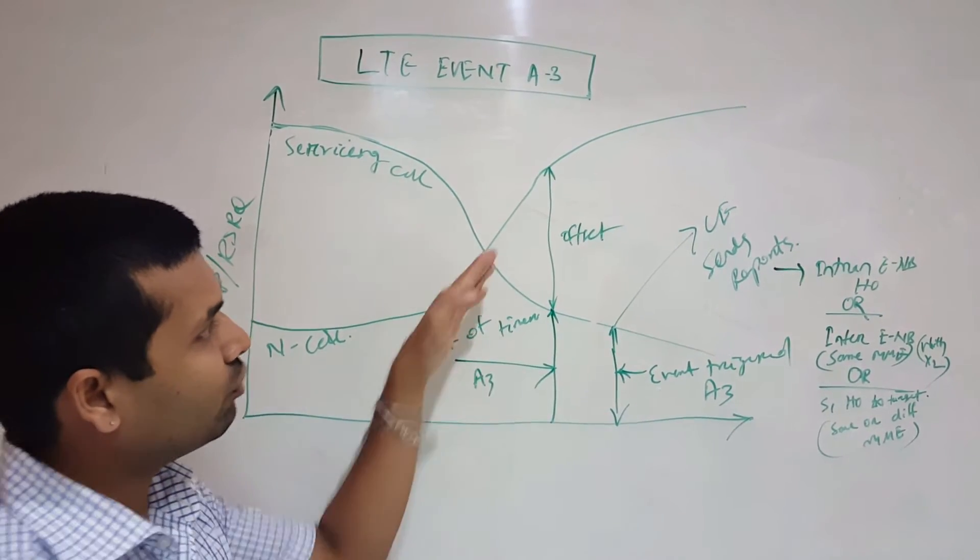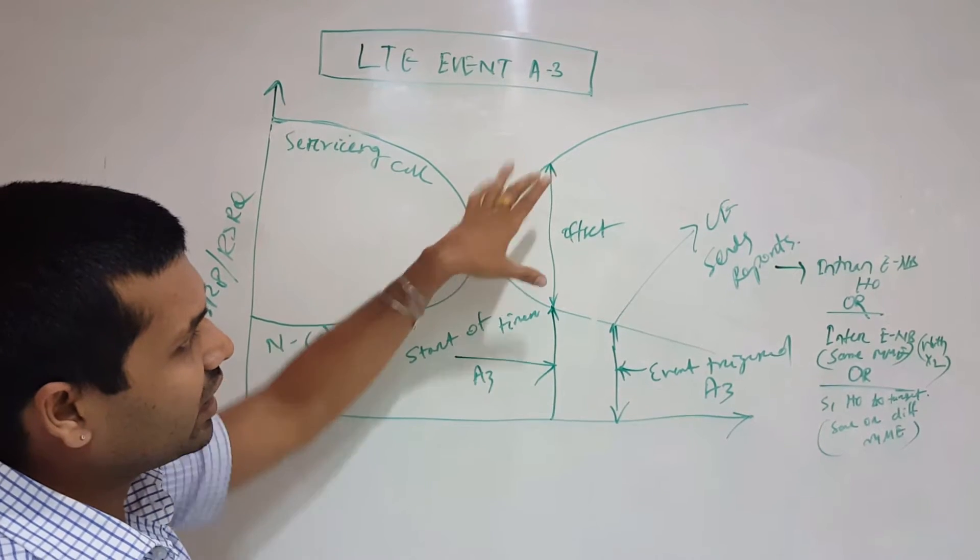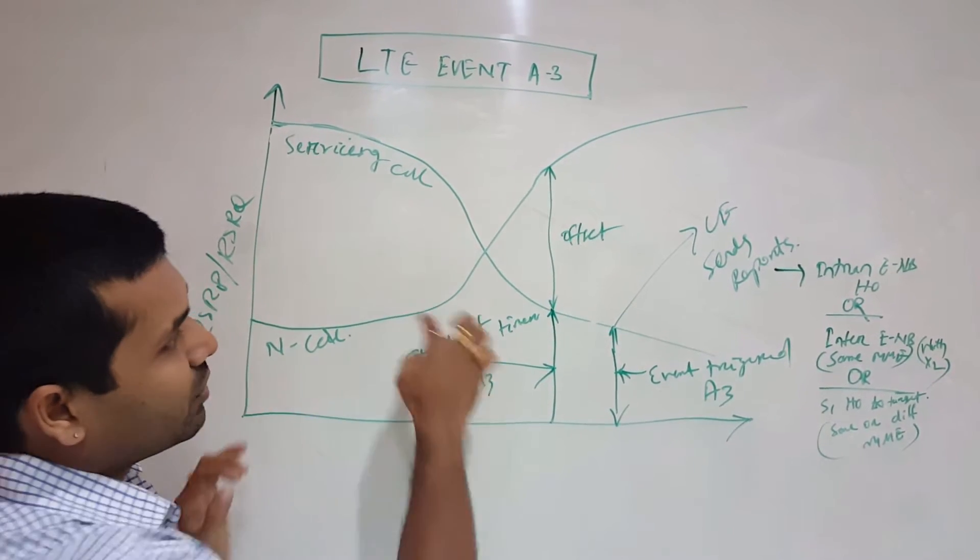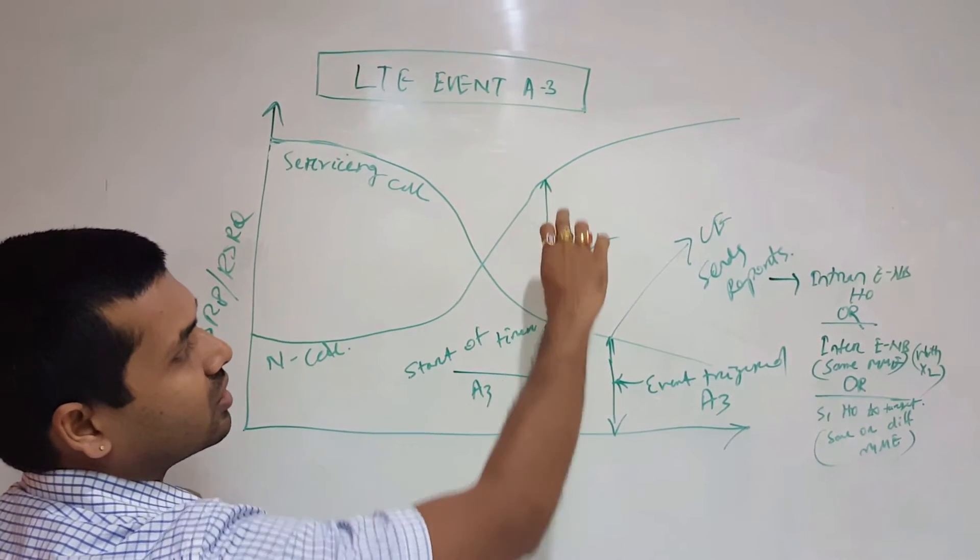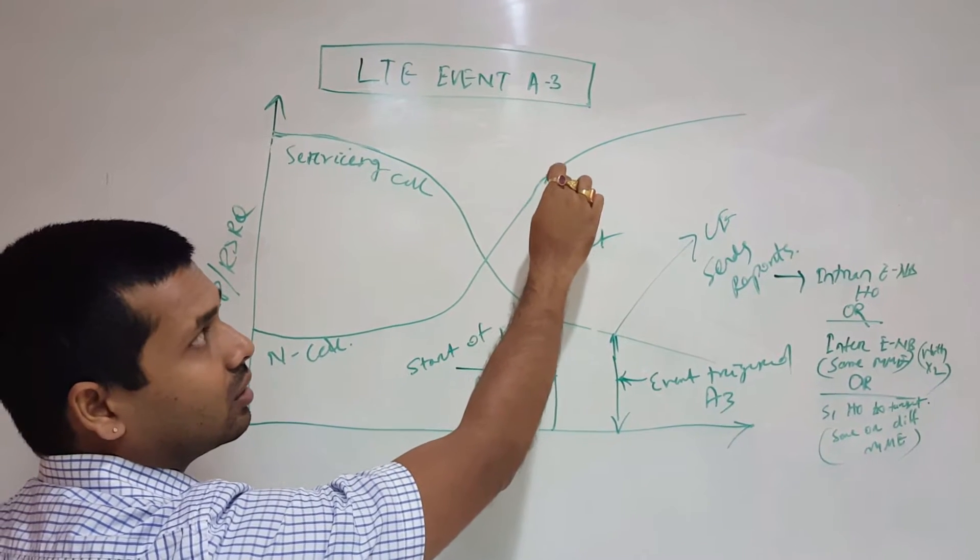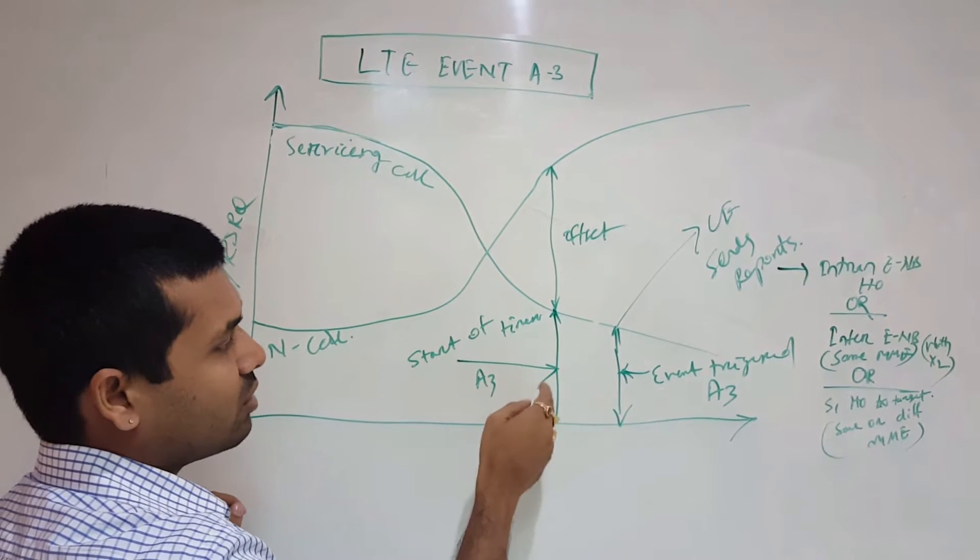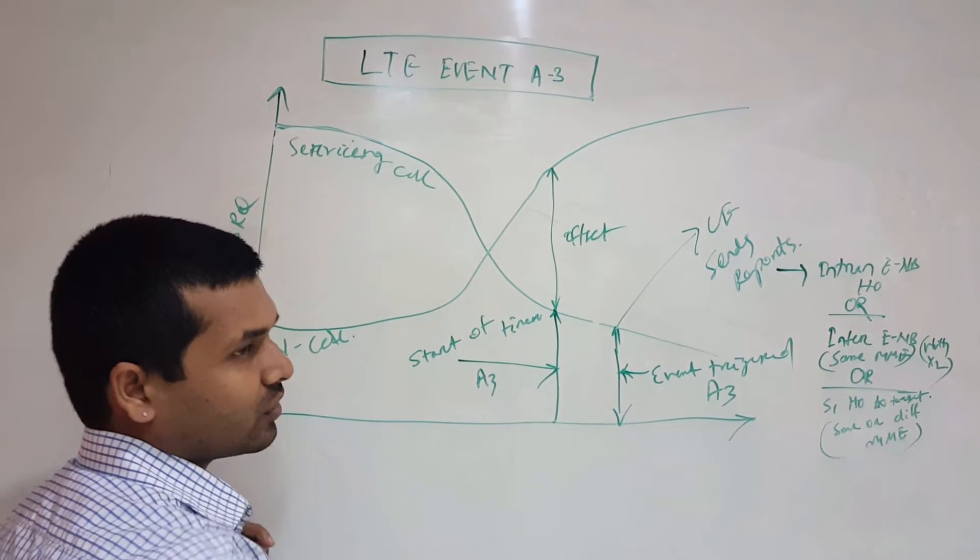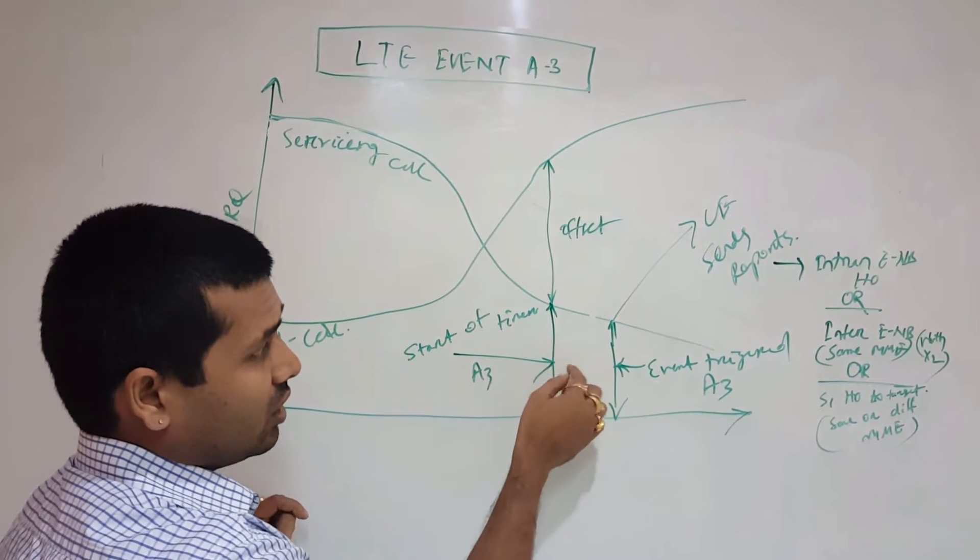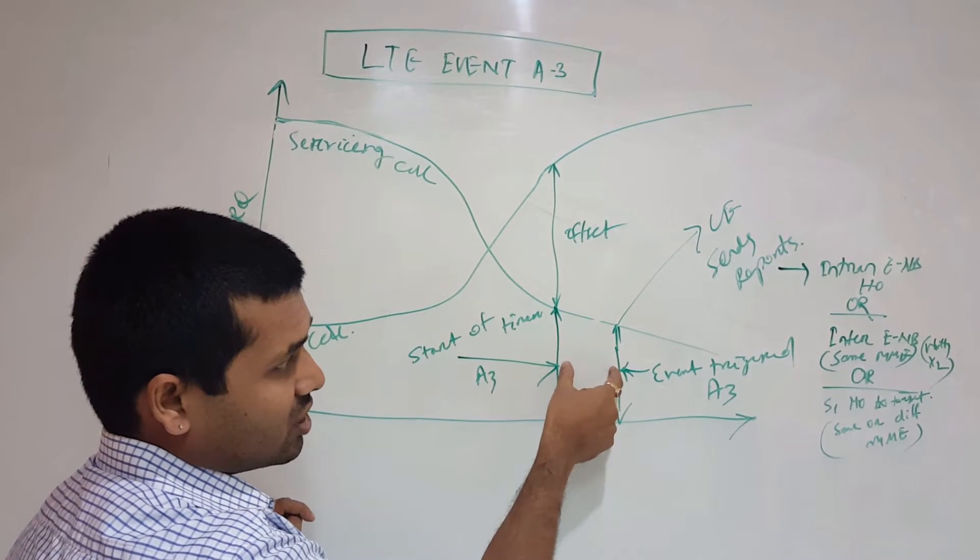This is the offset. When at a particular point in time the neighbor cell becomes this offset amount better than the serving cell, we start the A3 timer, which means we start measuring for A3.